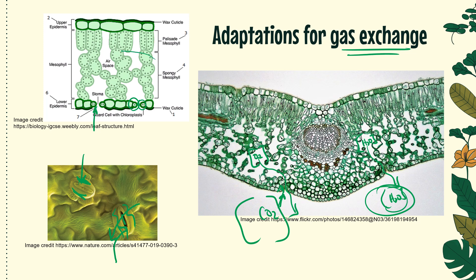Other structures within the leaf allow it to carry out gas exchange. The spongy mesophyll has lots of air spaces that allow for gas exchange and lots of cells separated from each other for more surface area. Just above the spongy mesophyll is the palisade mesophyll. The palisade mesophyll is packed together — it's not for gas exchange but is adapted for photosynthesis. The majority of photosynthesis in a leaf occurs in the palisade mesophyll, stacked close to the top to gather the most sunlight.